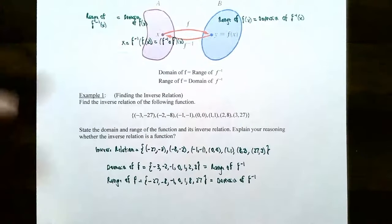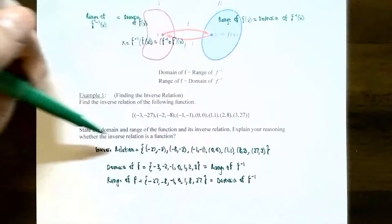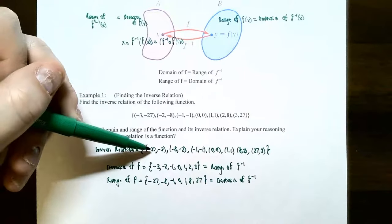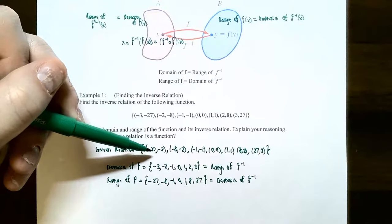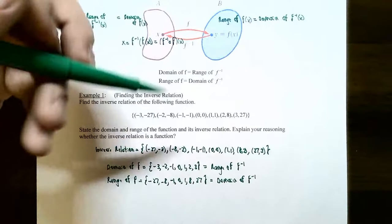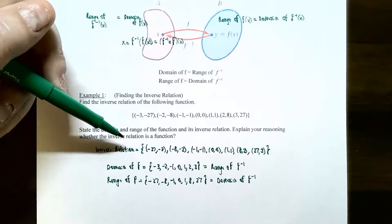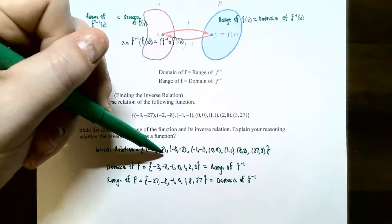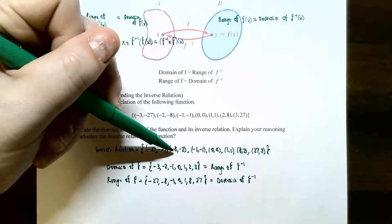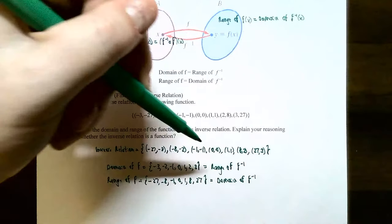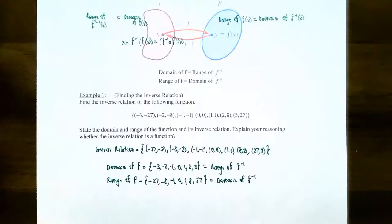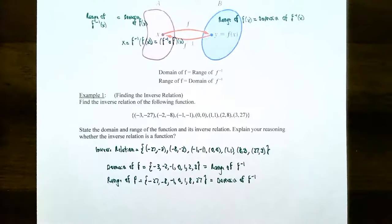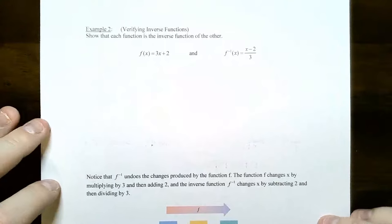Let's consider whether the inverse relation is a function. Looking at all the input values, every single input value corresponds to exactly one output value. Negative 27 only goes to negative 3, negative 8 only goes to negative 2, negative 1 only goes to negative 1, and so on. So the inverse relation actually is an inverse function.